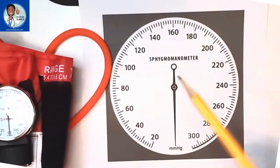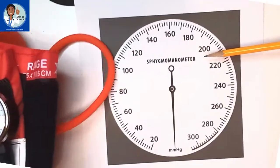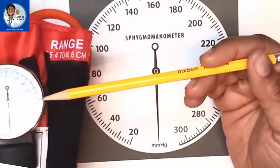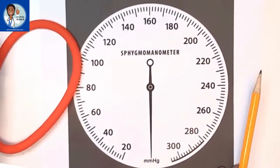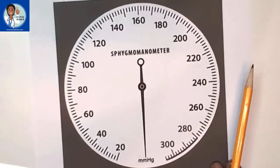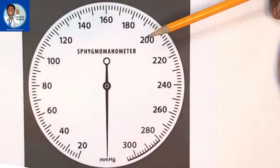So this is an illustration of the gauge on a sphygmomanometer or a blood pressure cuff. Because it's going to be harder to read on the actual cuff itself, we're going to use this drawing to show you how to read the gauges so that you get your numbers accurate when you're taking someone's blood pressure.